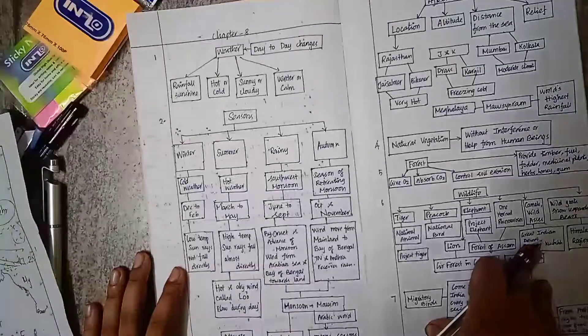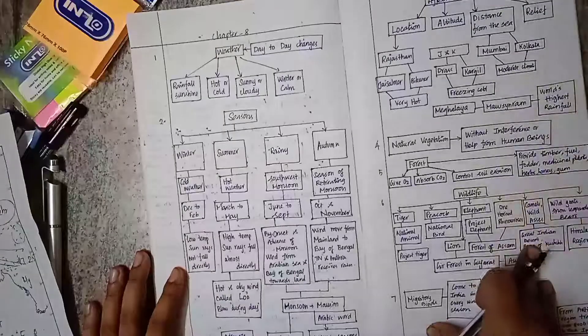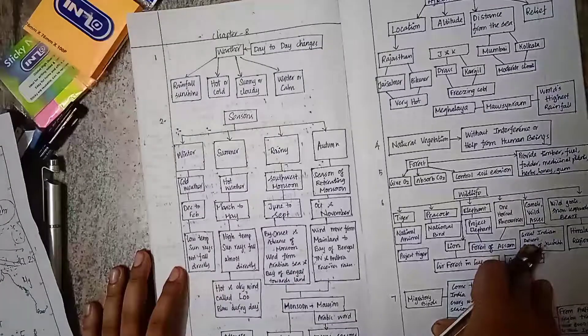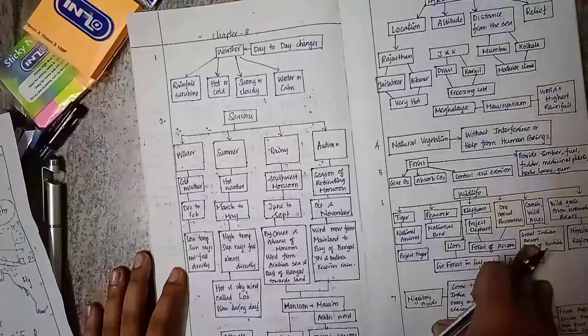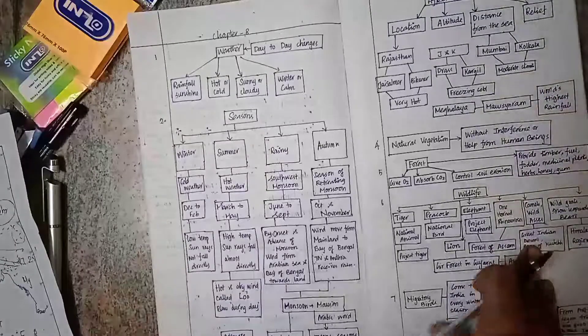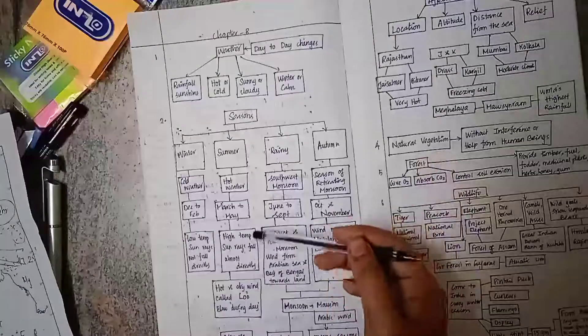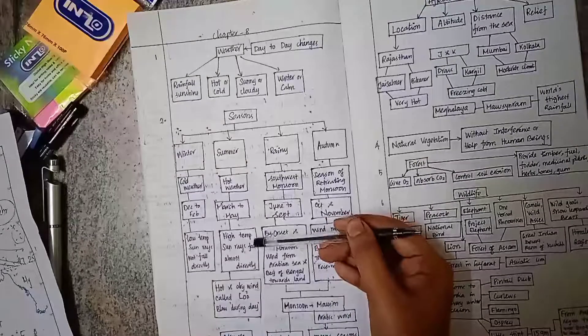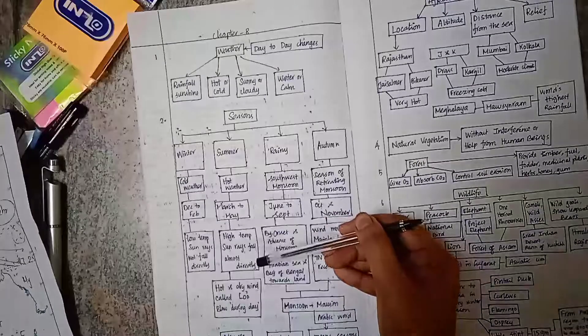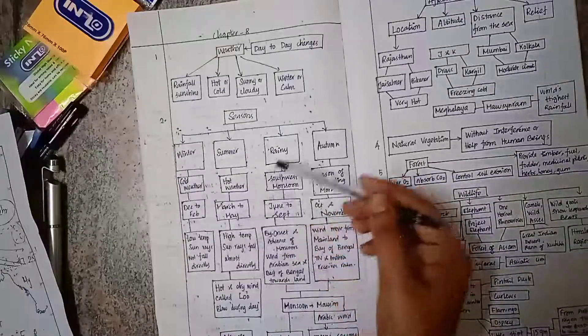After this, we have summer with hot weather. March to May is the period with high temperature, and sun rays almost fall directly during this period.